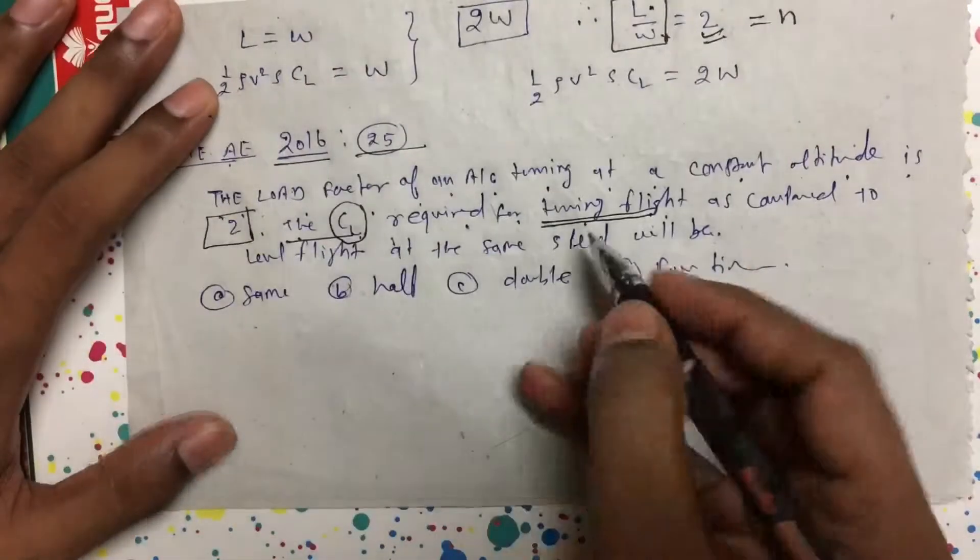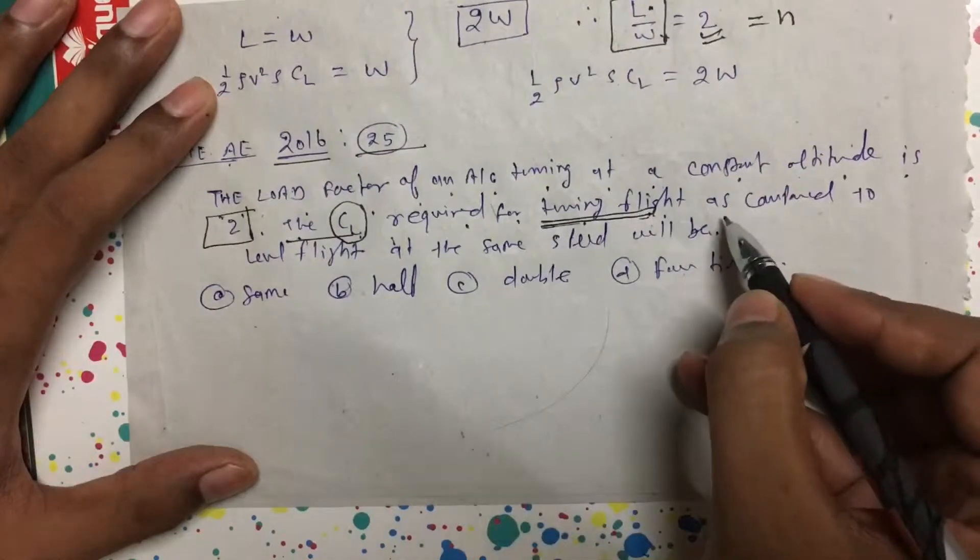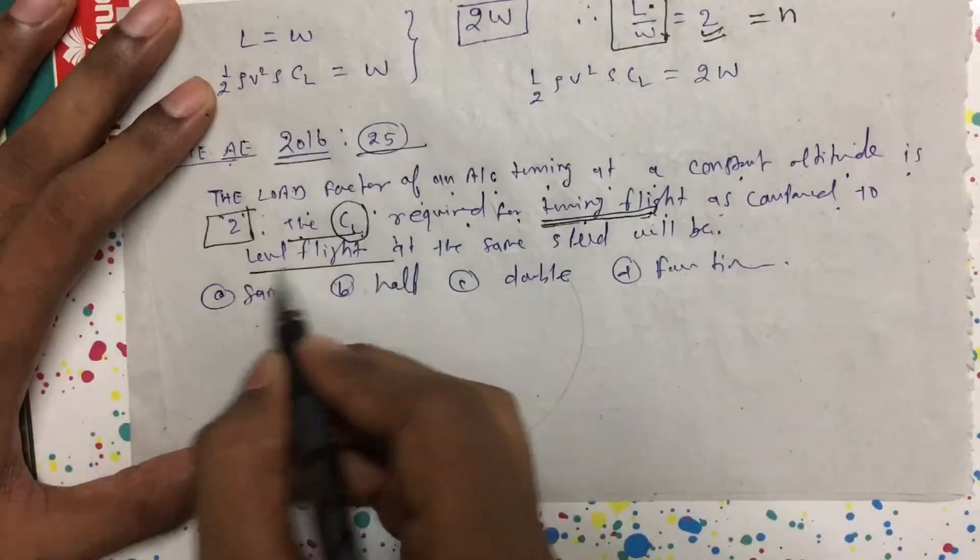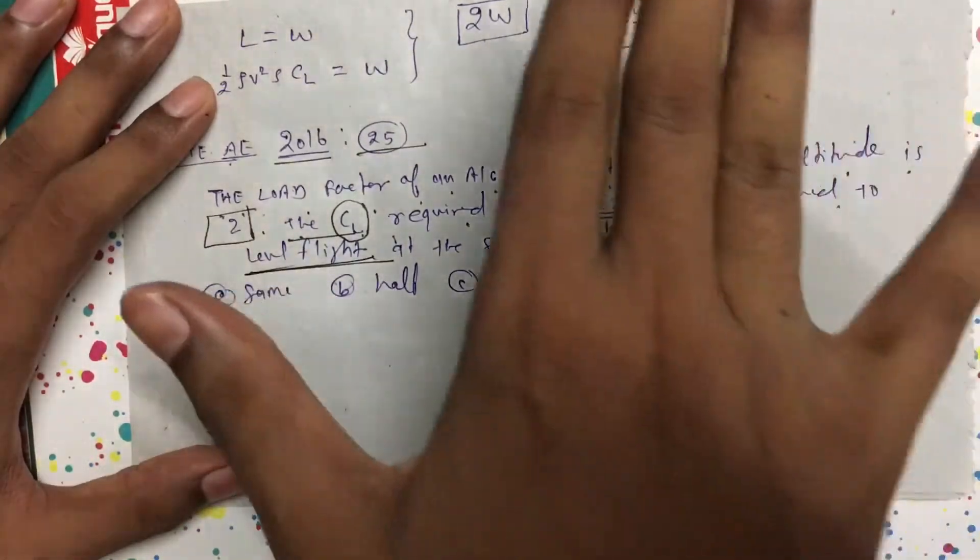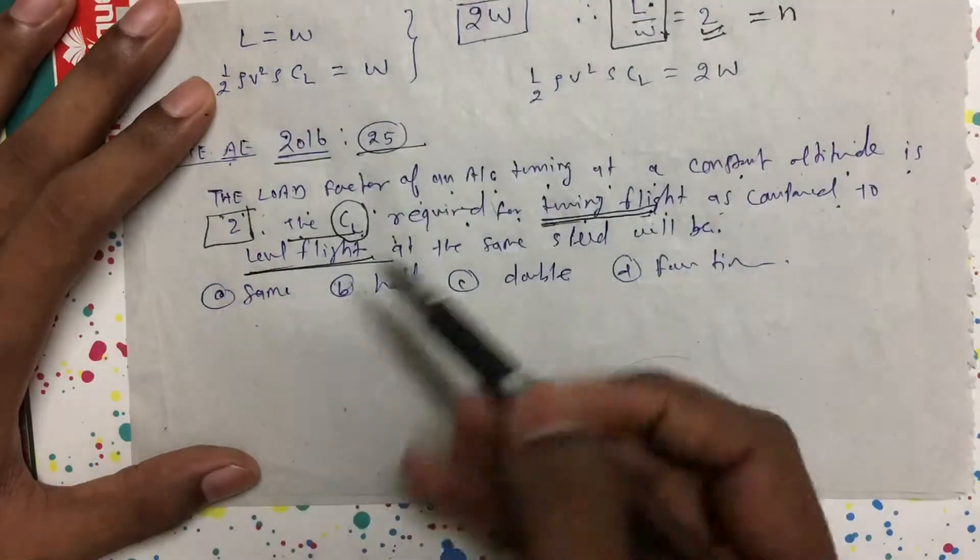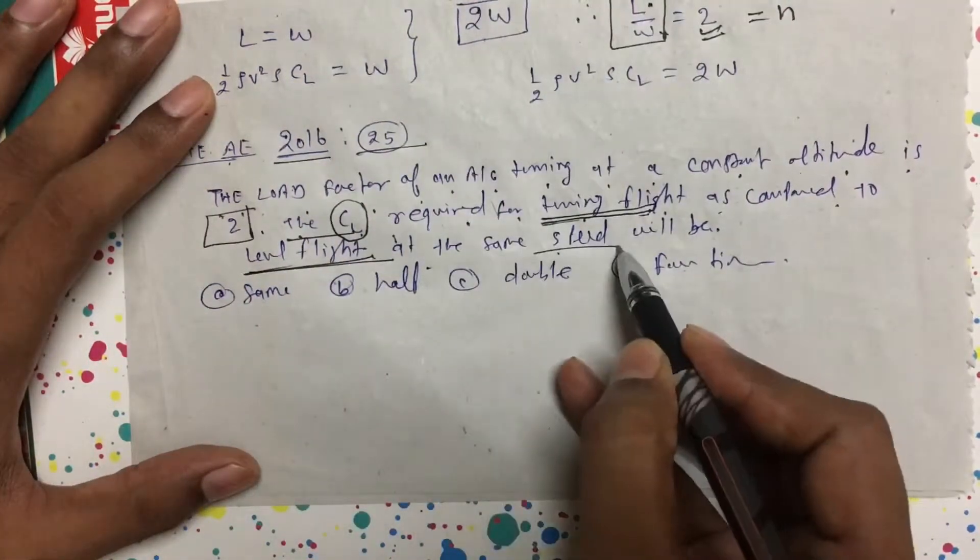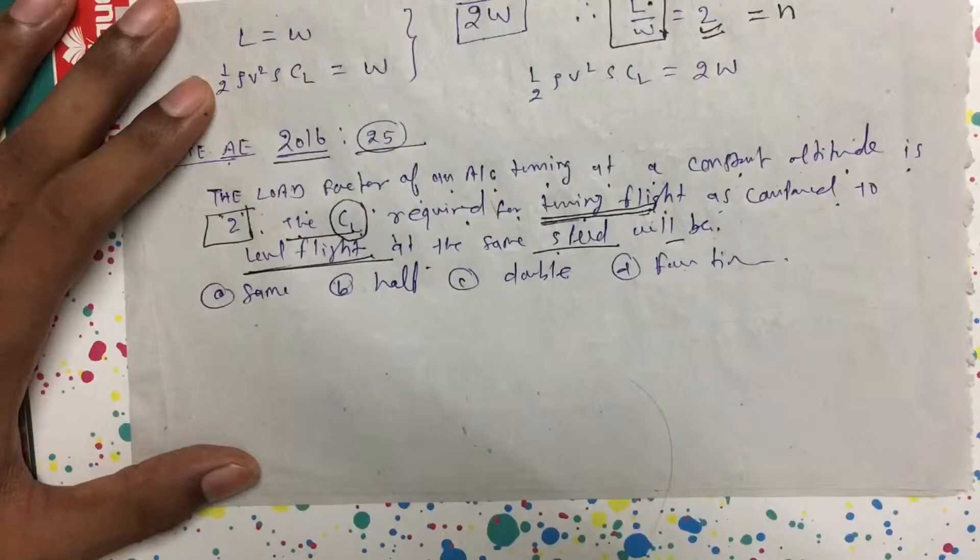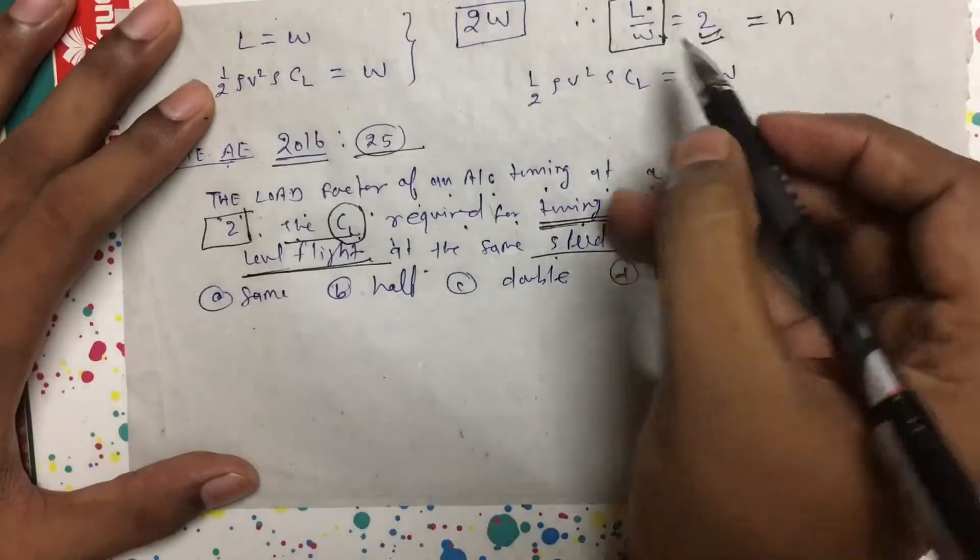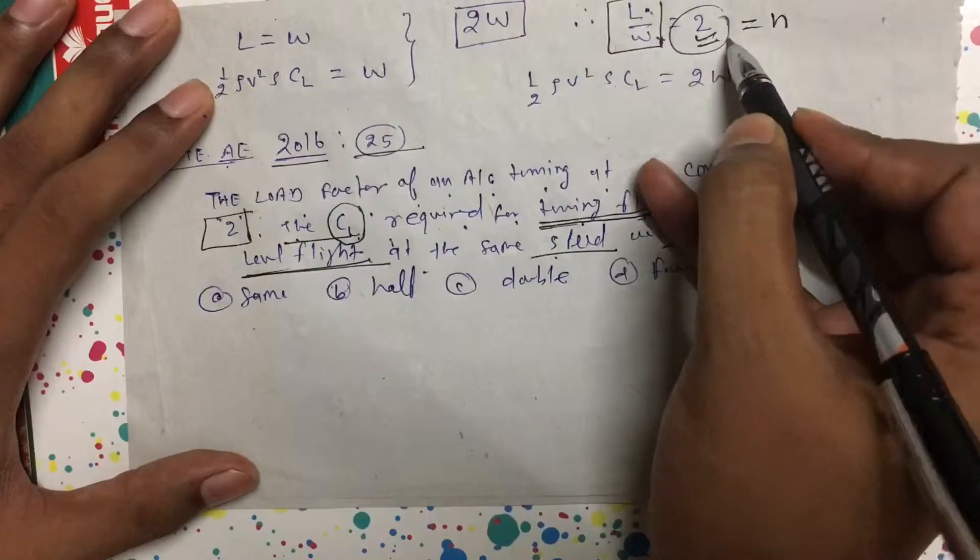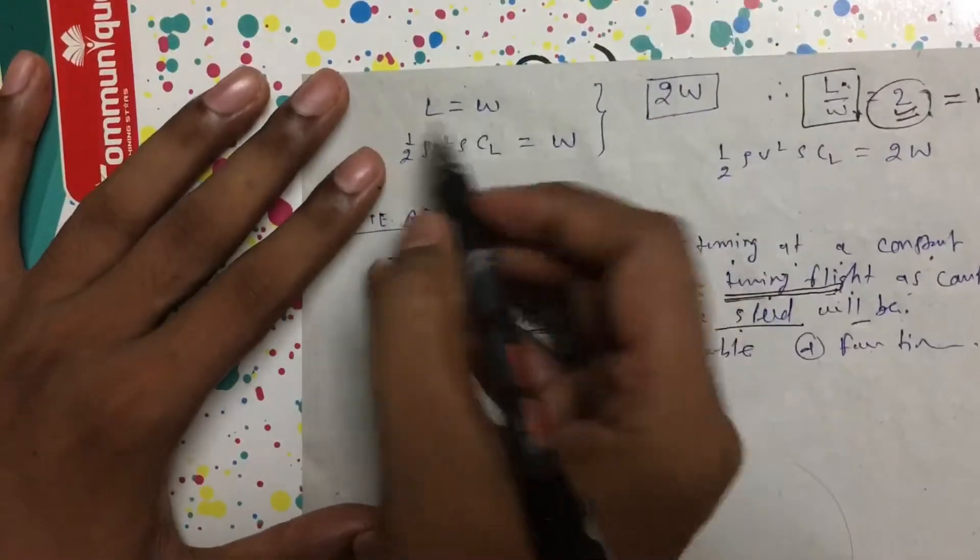So that is the case of turning flight, as compared to level flight. Level flight means wings will be level on both sides. Load factor is lift by weight, which is given as 2. In the case of level flight, lift equals weight.